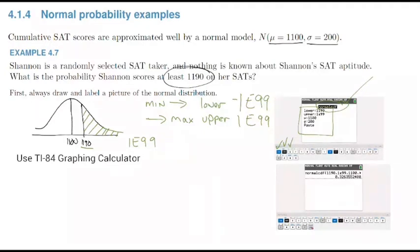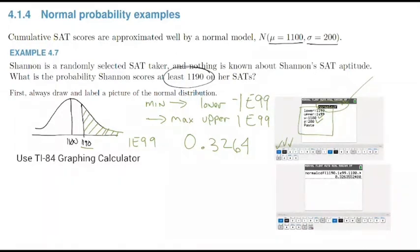Type those numbers in, then hit paste. Enter 1190, then 1E99, then 1100, then 200. Go down to paste and hit enter again. I get 0.3264. I'd like everybody to go through that process and make sure you can get that 0.3264.